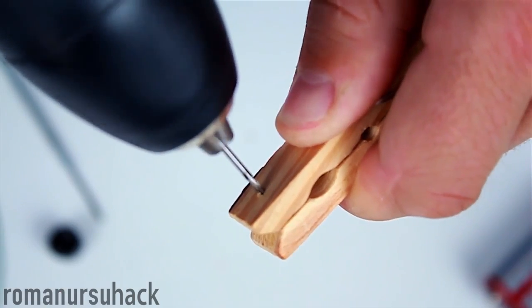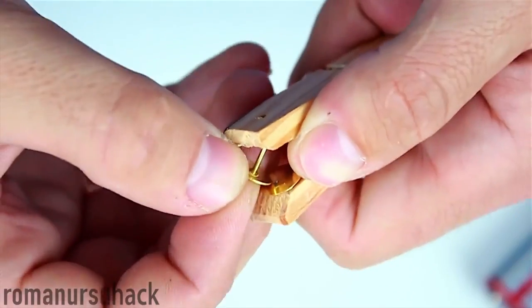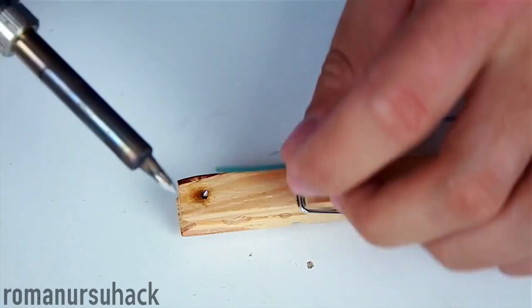First of all, we'll need to drill a hole through the clothespin. Then we insert the pins as shown in the video and solder one wire to each pin.